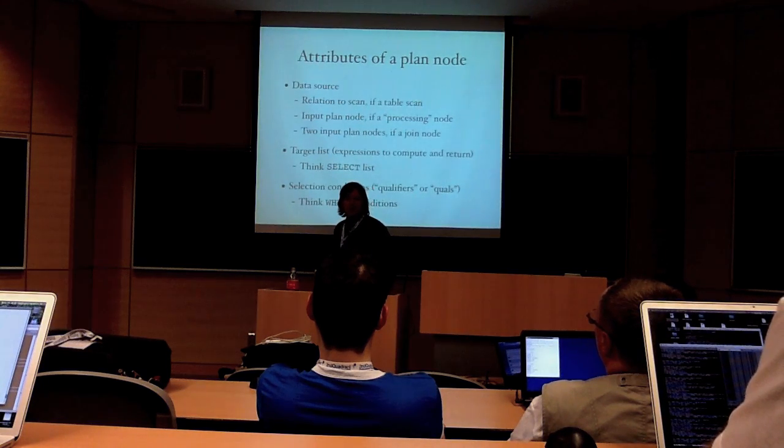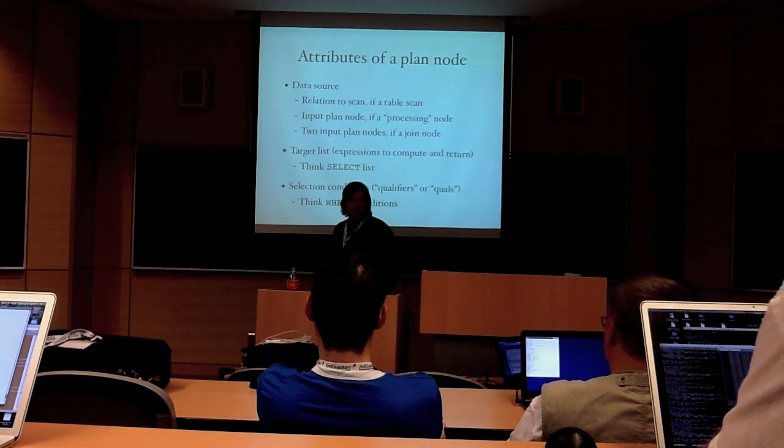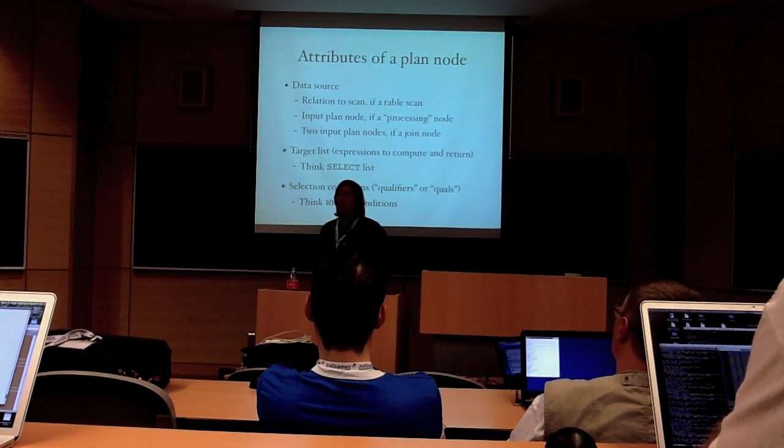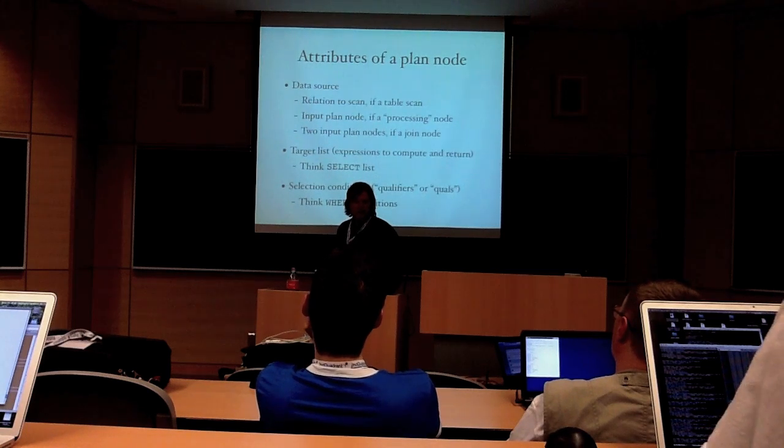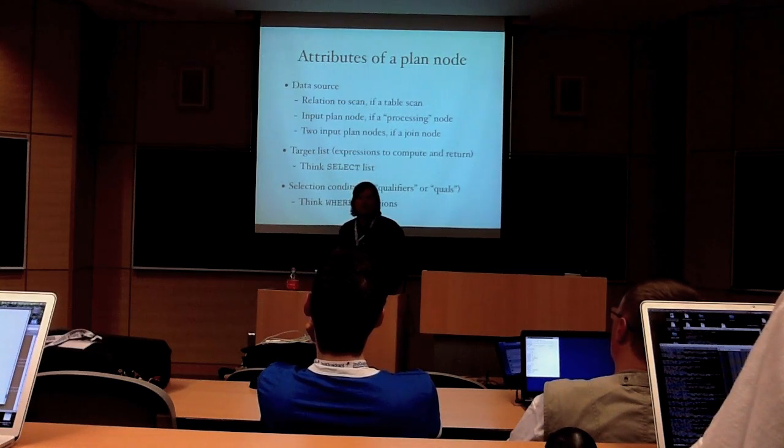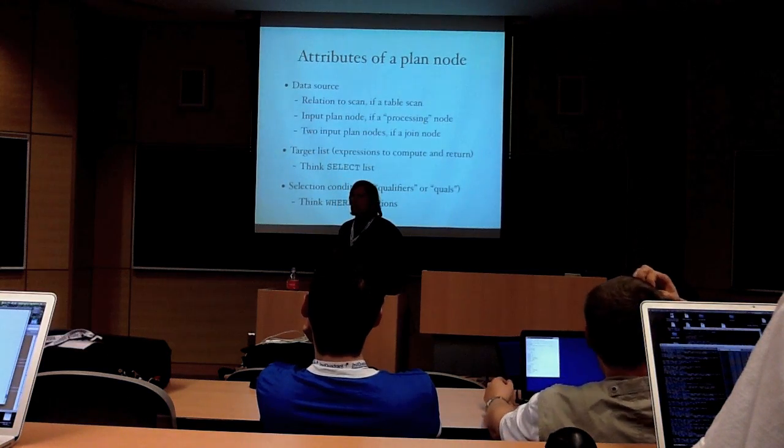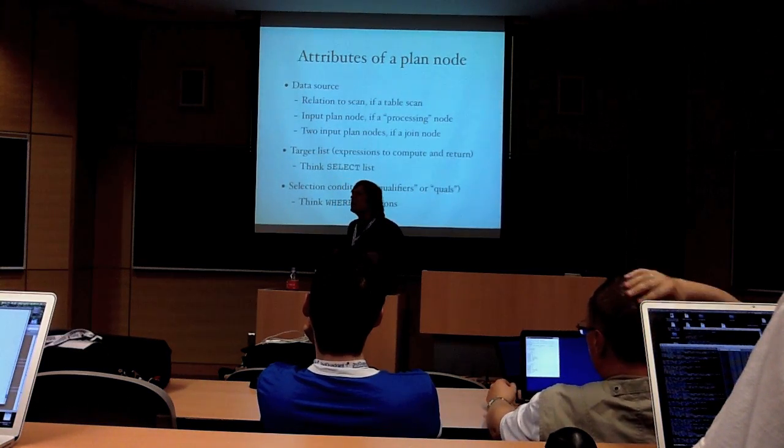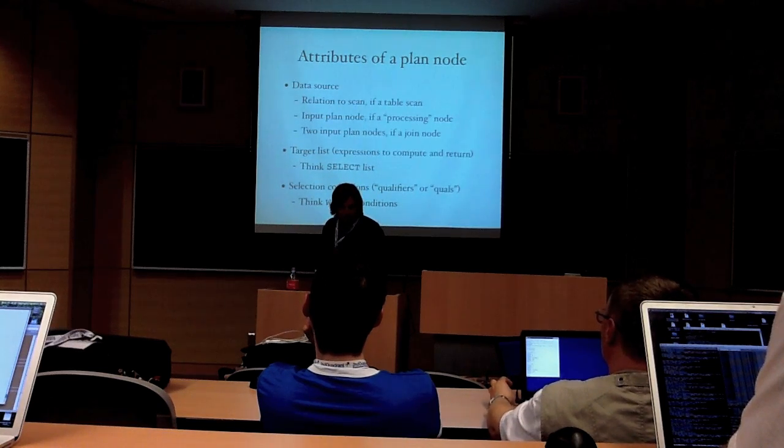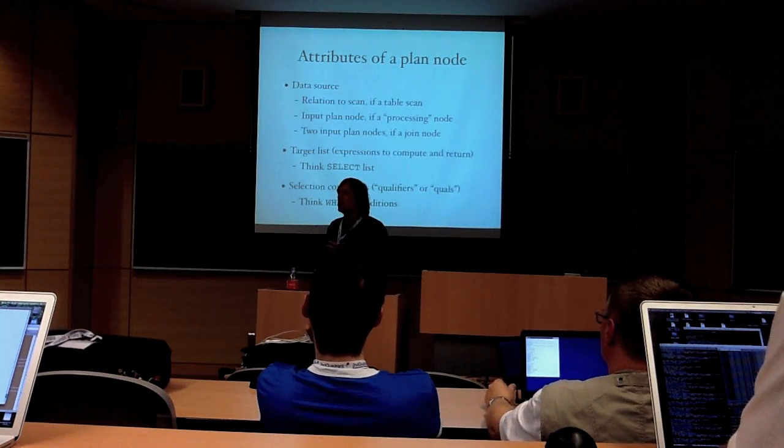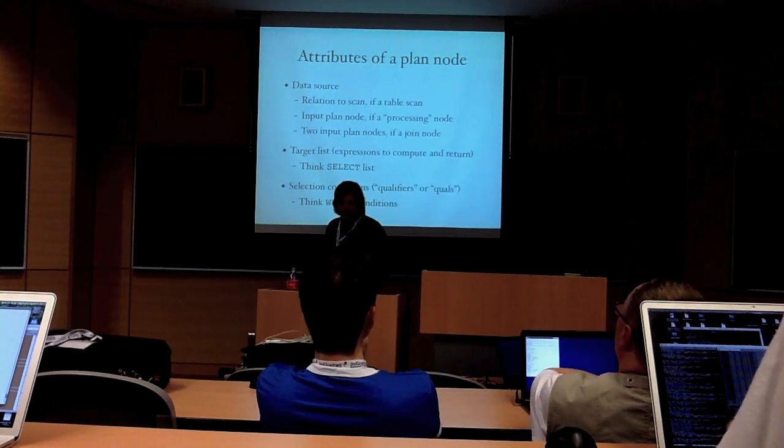It has also got a target list, and if you think it's like a select list, you know all you need to know about that. The target list specifies values that will appear in the rows emitted by that plan node. And then in many plan nodes, we'll have selection conditions, which are also called qualifiers or quals, and there, if you think where clause, you know, what that does. It filters out rows that don't satisfy the condition. So whatever comes out of the plan node is expected to satisfy that condition.